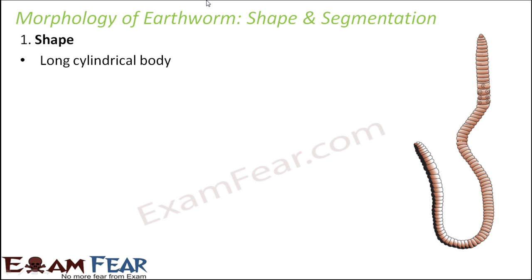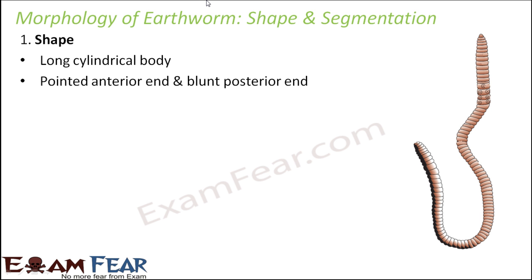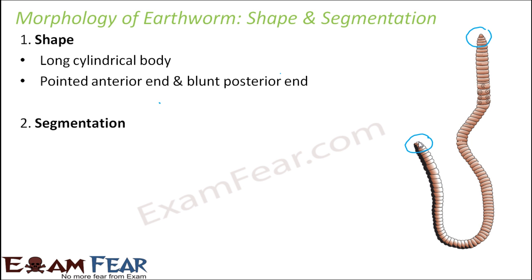The earthworm has a long cylindrical body, which is very obvious. It has a pointed anterior end and a blunt posterior end. So the front end is quite pointed, whereas the back end is blunt. That is all about the shape of the earthworm.